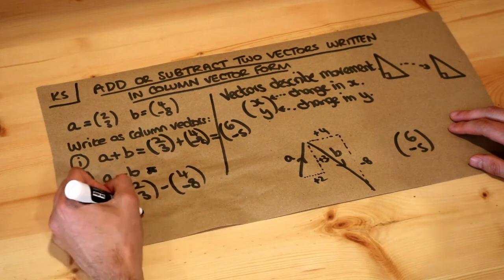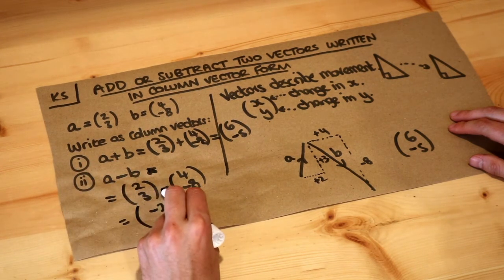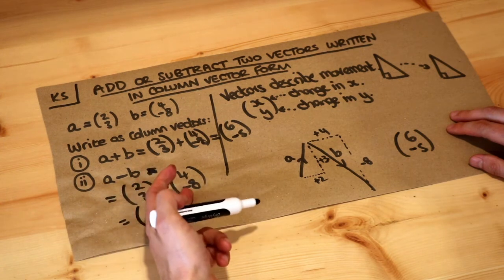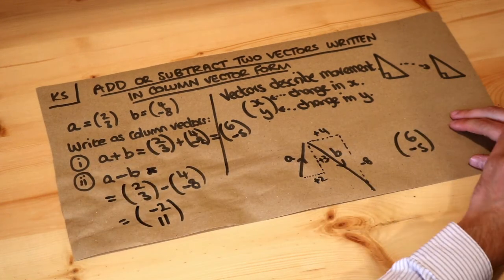All we need to do is just subtract the top numbers: 2 minus 4 is -2. And then let's be careful here: 3 minus negative 8 becomes 3 plus 8. Remember when you subtract a negative you end up adding it. 3 plus 8 is 11, so that would be the vector for a minus b.